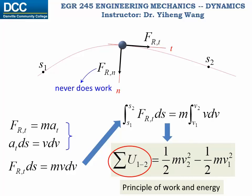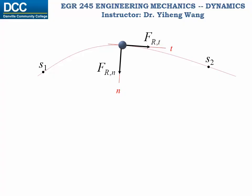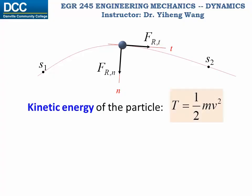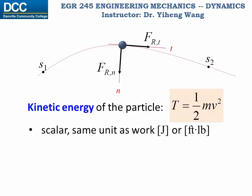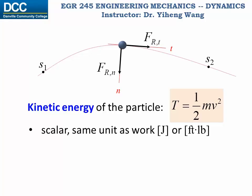The left-hand side is the work. Now, what is the right-hand side? For any particle with speed, we can define its kinetic energy as T equals one-half mv squared, where v is the speed of the particle. Kinetic energy is the energy associated with the motion of the object. Just like work, it is a scalar and has the same units — joules in the SI system and foot-pounds in the US customary unit system. Unlike work, which is associated with a process, kinetic energy is associated with the status of an object.